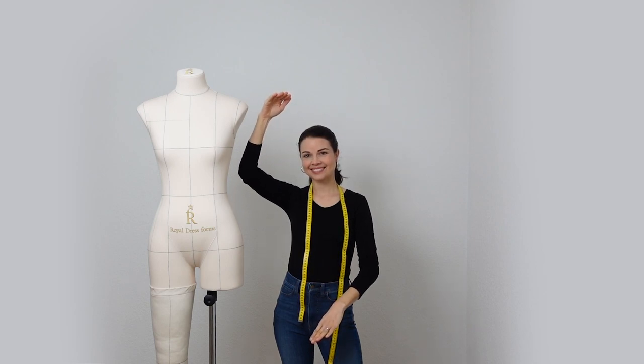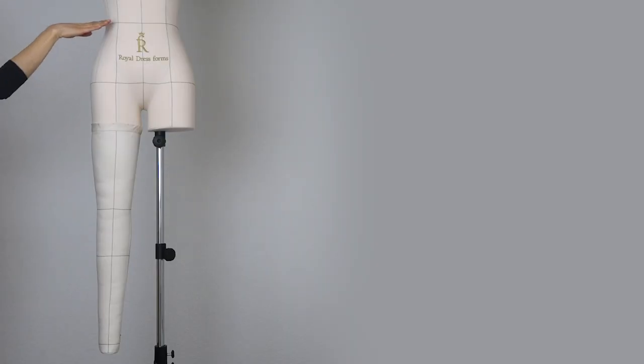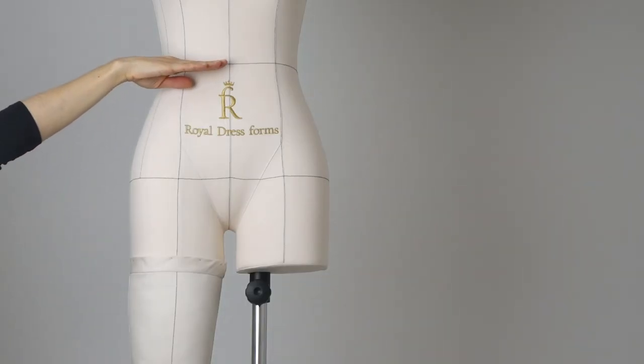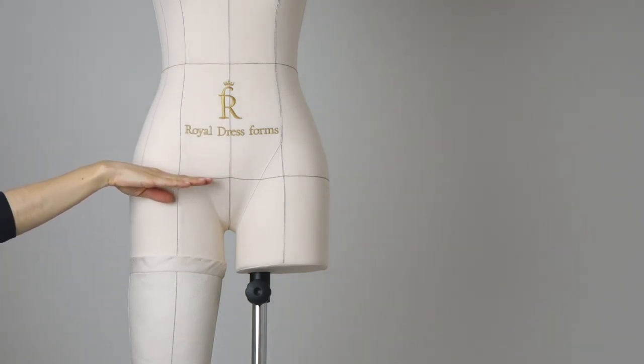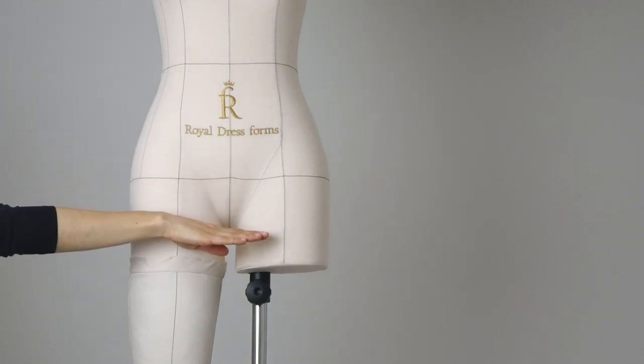Now we have a few lengths to measure. First, the trouser length, which is the total desired length of your legging from the level of your waist down to your ankle's level. Then the waist to knee measurement, the distance between the level of your waist and the level of your knees. Then the waist to hip length that we should measure exactly at the level where we measured the hip circumference. And finally, the riser measurement, which is the distance between your waist level and your crotch level.